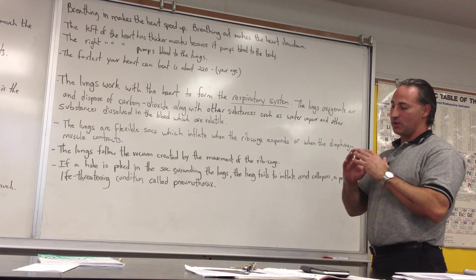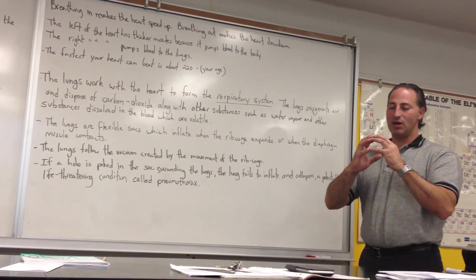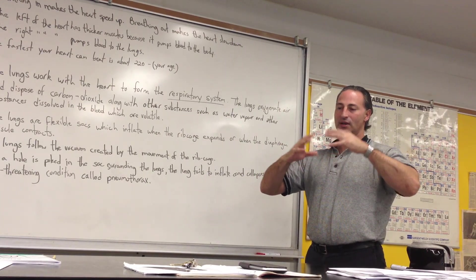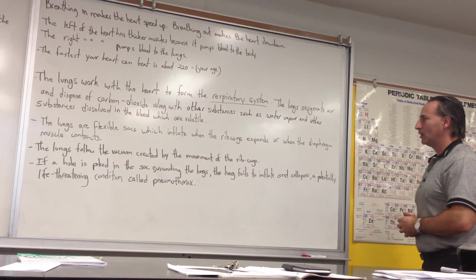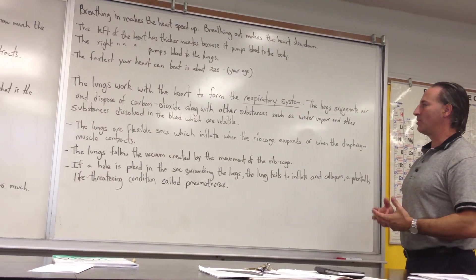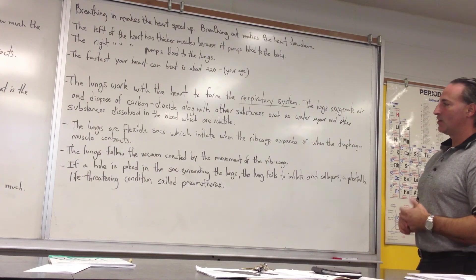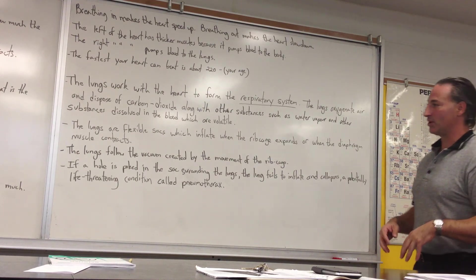The other way is with the diaphragm. The diaphragm is sort of a concave muscle, and when it contracts, it straightens out, flattens out, and it creates a void behind it, and the lungs will follow that void to inflate. So, breathing in is a combination of the ribcage expanding and the diaphragm contracting. The lungs follow the vacuum created by the movement of the ribcage, and they inflate. That's how we breathe in.